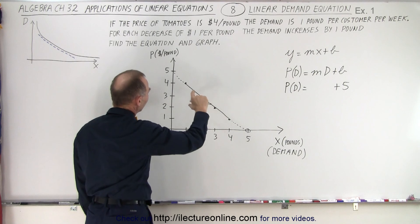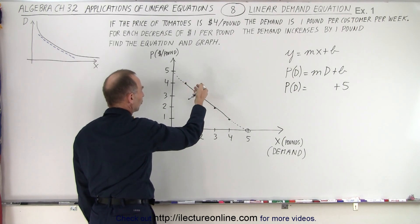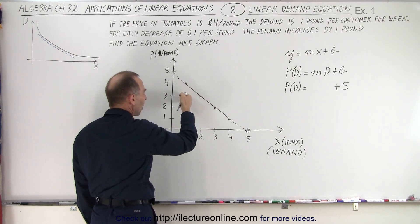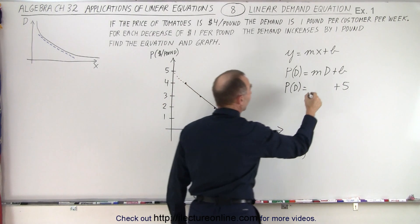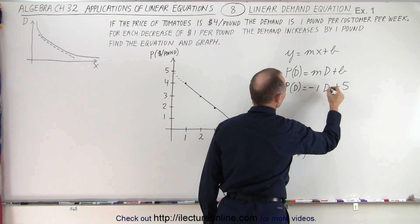And then the slope. Notice the slope is negative. And it looks like for every, so the slope is rise over run. In this case, drop over run. So it's one by one. So the slope is a negative one. So we have negative 1 times demand plus 5.